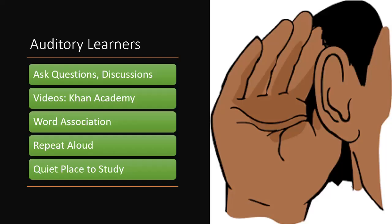Once you know your style — let's say you're an auditory learner — some good strategies are: ask questions, discussions are wonderful because you're hearing the information, use Khan Academy and listen to the videos on whatever topic you're learning. Word associations like poems and rhymes help you remember auditorily. Read out loud when studying. Also, auditory learners are easily distracted by sound, so study in a quiet place and sit up front near the teacher.